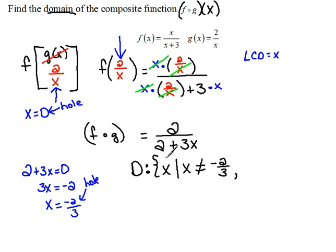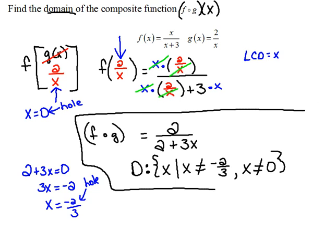Our composite function cannot have an x value of negative 2 thirds. But we also cannot have an x value of 0 because that would have caused a problem in the first place. So our final answer for the domain would be the set of x's such that x cannot equal negative 2 thirds and x cannot equal 0.